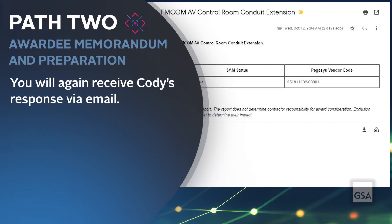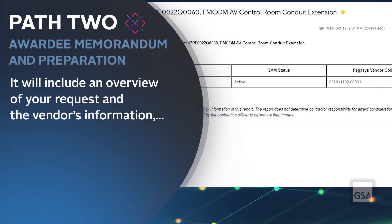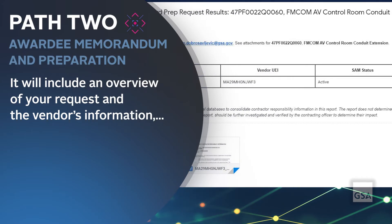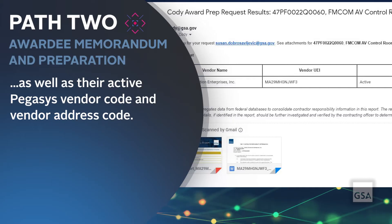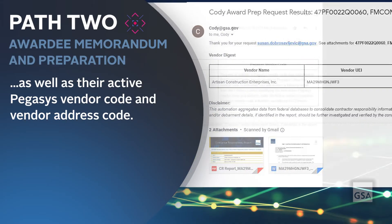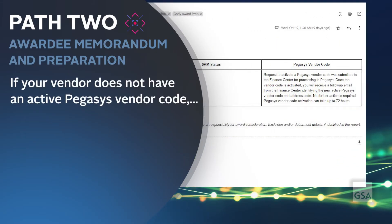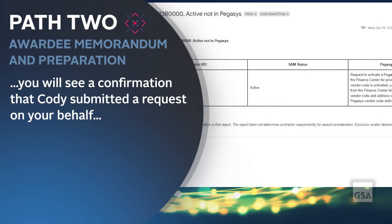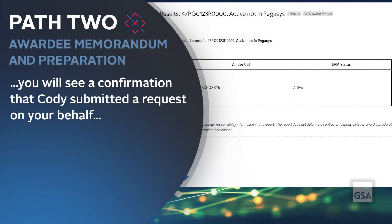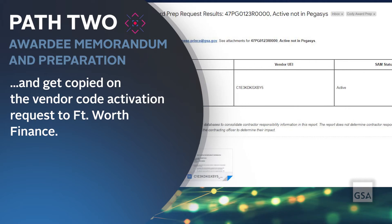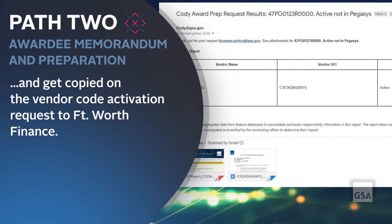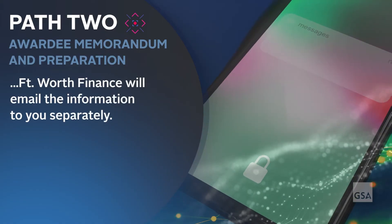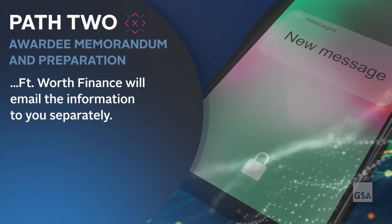You will again receive Kodi's response via email. It will include an overview of your request and the vendor's information, as well as their active Pegasus vendor code and vendor address code. If your vendor does not have an active Pegasus vendor code, you will see a confirmation that Kodi submitted a request on your behalf and you'll be copied on the vendor code activation request to Fort Worth Finance. When this code is activated, Fort Worth Finance will email the information to you separately.